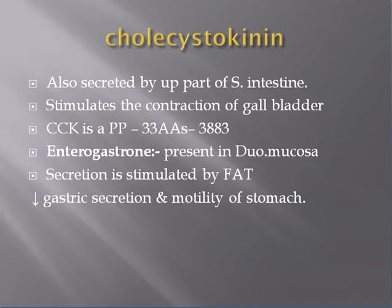Coming to cholecystokinin — also called chylocystinine. Cholecystokinin is also secreted by the upper part of the small intestine. It stimulates the contraction of the gallbladder. Cholecystokinin is a protein-like compound consisting of 33 amino acids with a molecular weight of 3883.